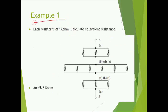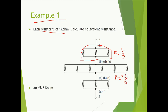Let us talk about another example: to calculate the equivalent resistance of a network where each resistor is given as 1 kilo ohm. First, let us consider this portion where three resistors are connected in parallel with each other. So 1 over 1 plus 1 over 1 plus 1 over 1 equals 1 over R1, giving R1 equals 1 over 3 kilo ohm. Then for the next group of six resistors in parallel, R2 equals 1 over 6 kilo ohm. And for the last group of three, R3 equals 1 over 3 kilo ohm.